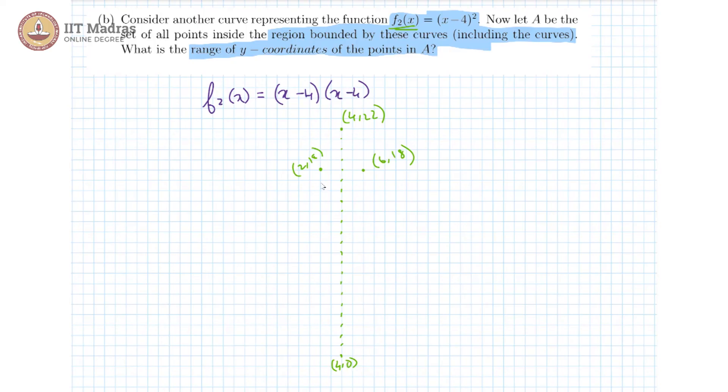So if one parabola is like this, f1 had negative x square coefficient, so it is a downturned parabola. Then the other parabola, x minus 4 whole square, is an upturned parabola, which is going to be something like this.